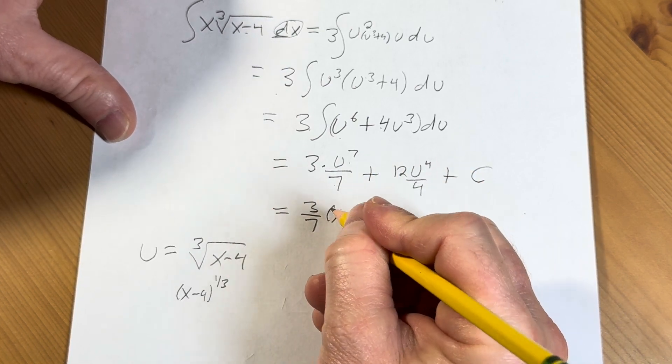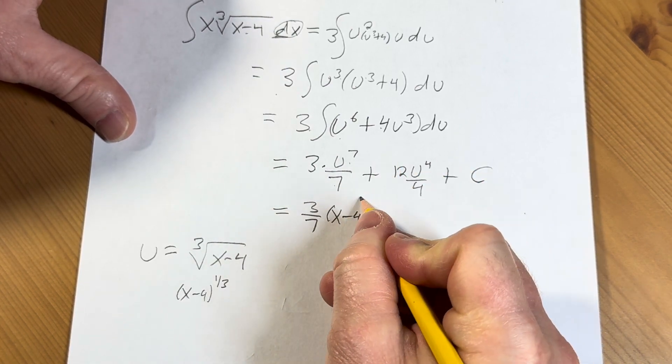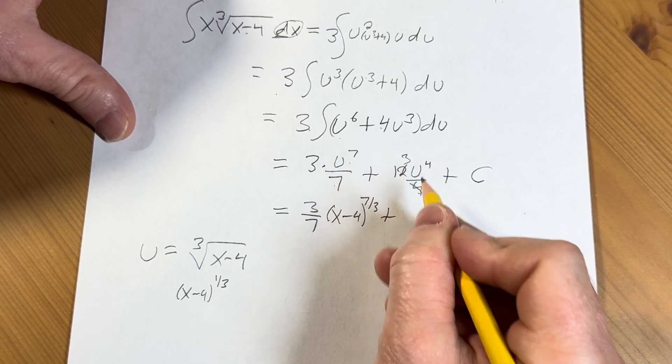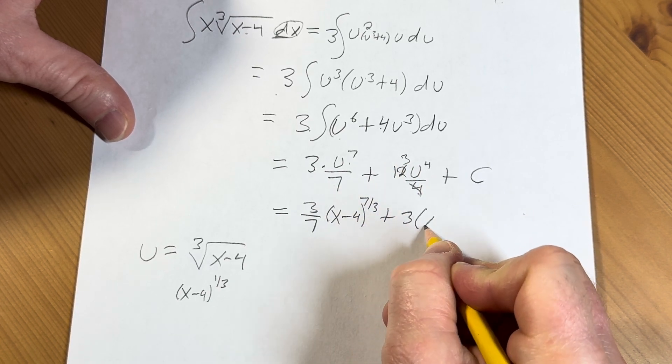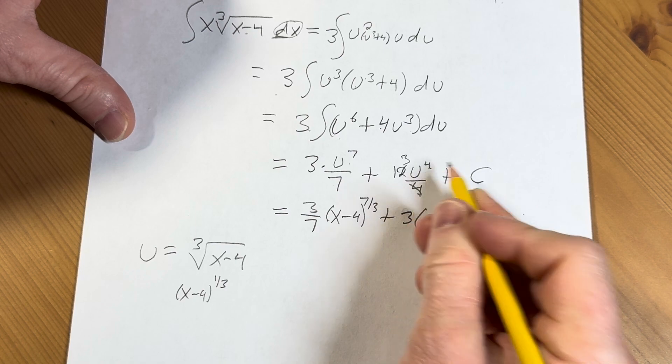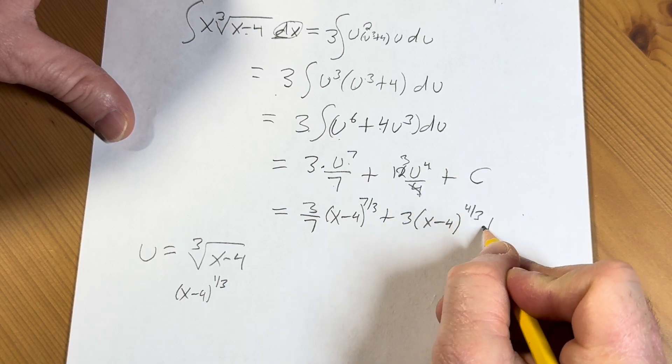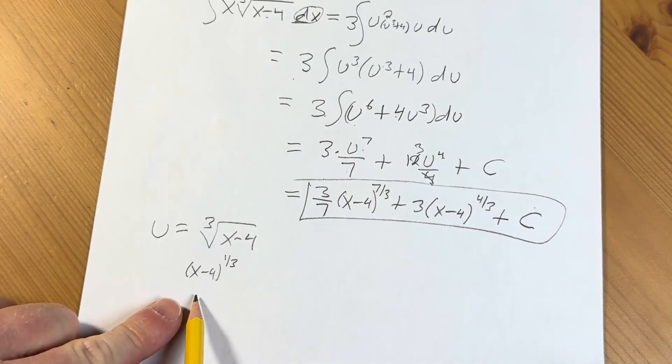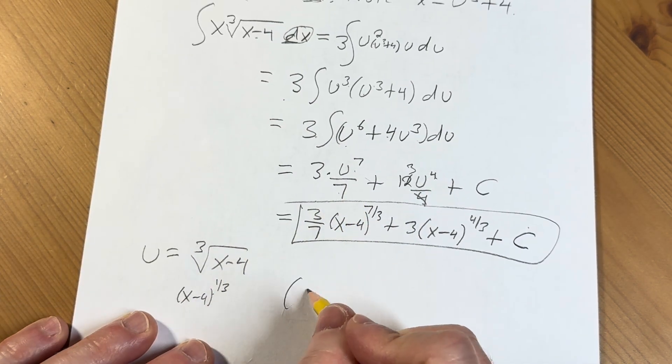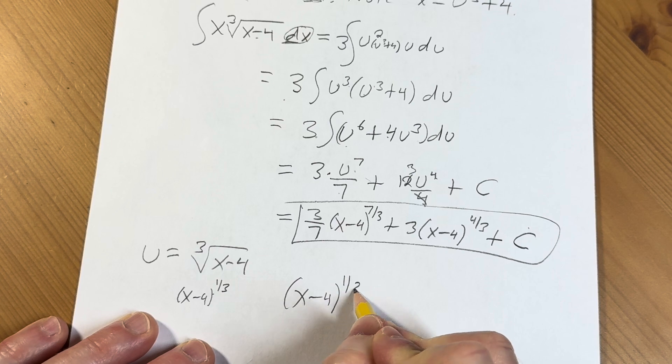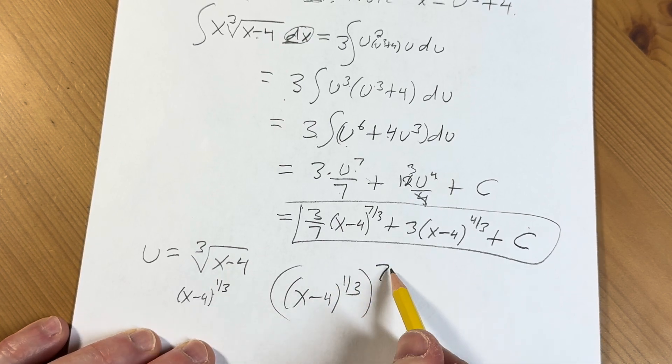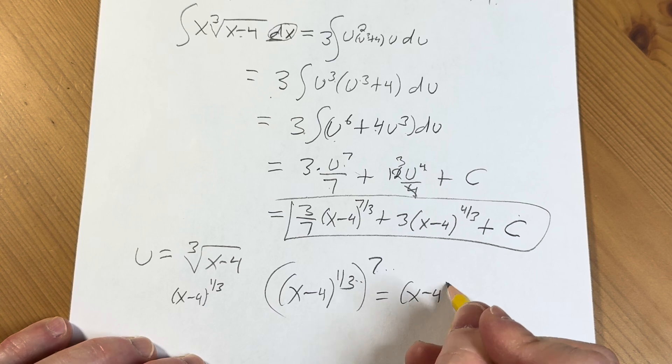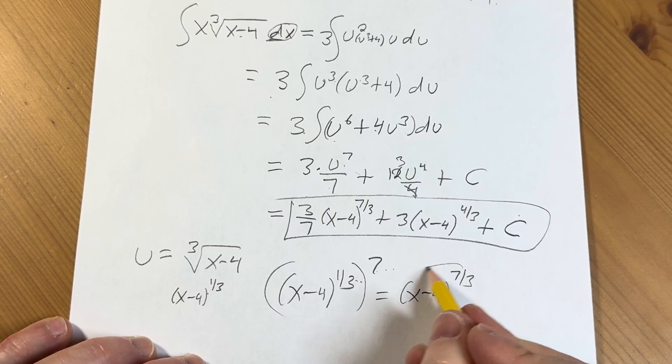So when you raise it to the 7th power, it's going to be x minus 4 to the 7/3rds plus 4 goes in 12 three times, this is 3, x minus 4 to the 4/3rds plus our constant of integration. So a little bit sneaky there because we're raising this first to the 7th power. Let me show you the step. So it's x minus 4 to the 1/3rd to the 7th power. And then properties of exponents say you multiply. This would be x minus 4 to the 7/3rds, just like that.